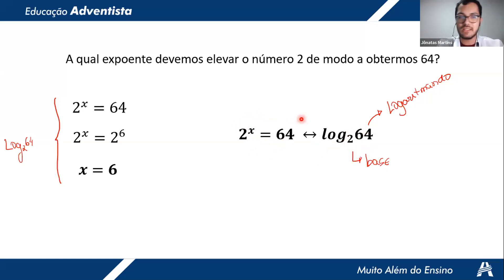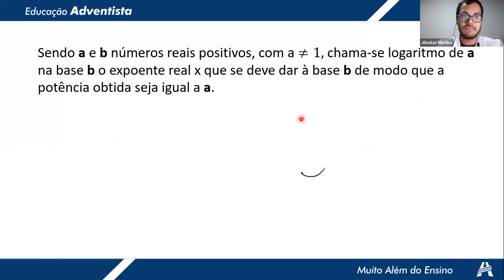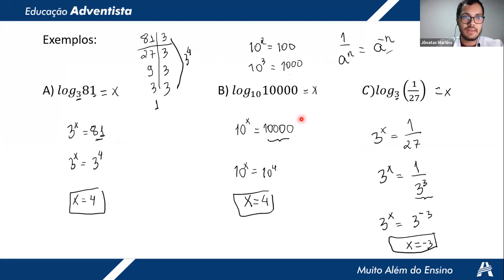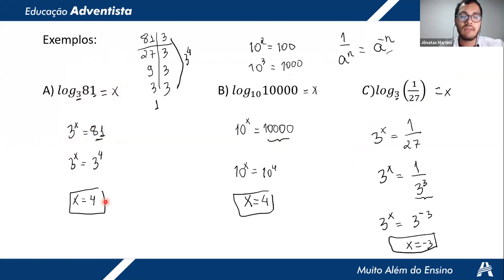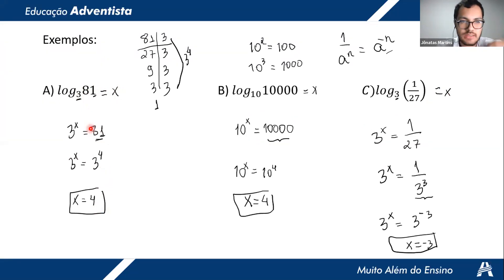For example, log of 81 base 3: what exponent makes 3 equal to 81? You set 3 to the exponent x equal to 81, then solve the exponential equation. We're going to apply this in the exercises.